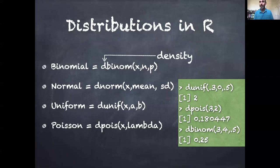For the Poisson, we might ask, if something has an expected value of two, how often are we going to count three things? You'll see that 18% of the time. Or if we have four fair coin flips at 0.5, how often will we get three heads? 25% of the time.